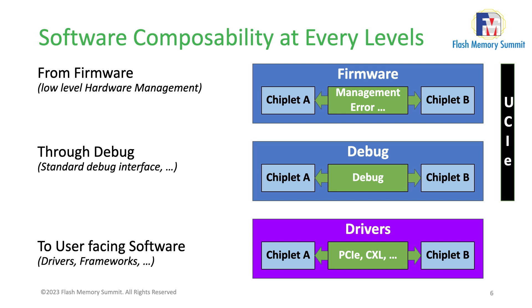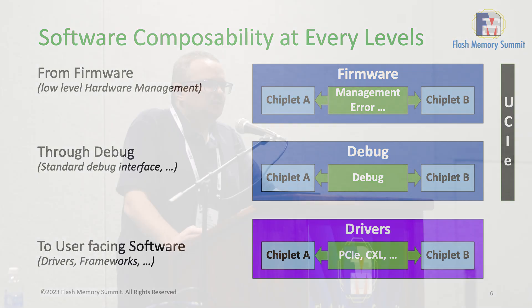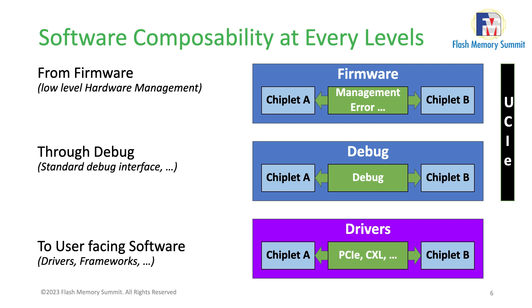Debug is also very important. Bringing up a chip is always painful and stressful — even more so with multiple vendors who can point fingers at each other. You need good compatibility and a good interface between them to pinpoint issues. We want to standardize at the debug level, provide standard APIs and tools, and leverage existing industry standards. For user-facing software — Linux kernel, OS — I expect it will evolve slightly from what exists today, and open source drivers and software will be better for the ecosystem to flourish.